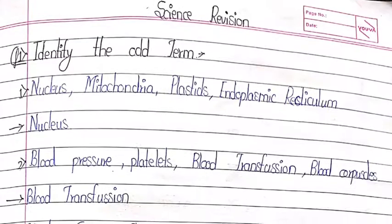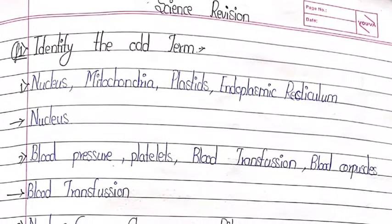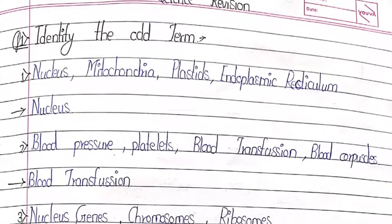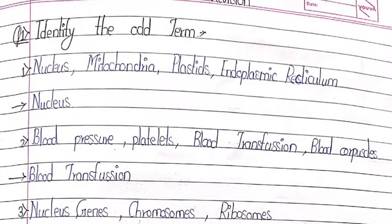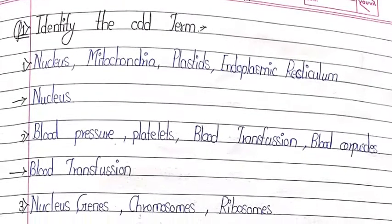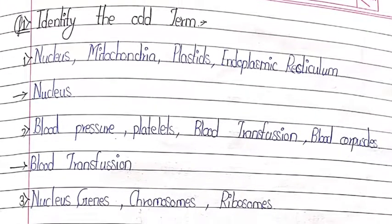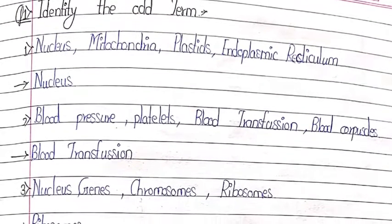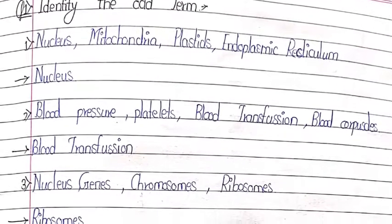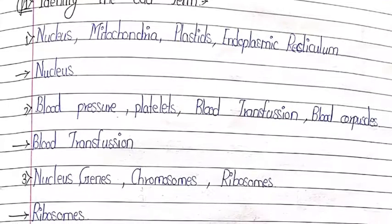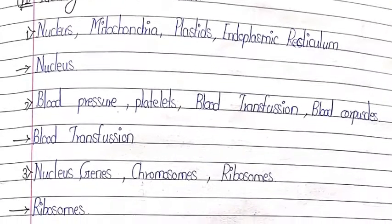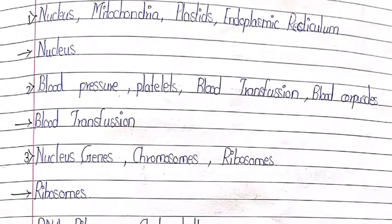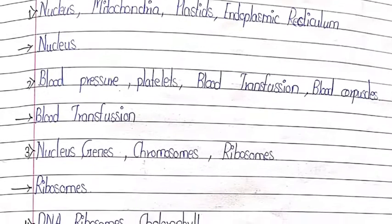Question number 1: Identify the odd term. First one: nucleus, mitochondria, plastids, endoplasmic reticulum. Answer: nucleus. Second: blood pressure, platelets, blood transfusion, blood corpuscles.